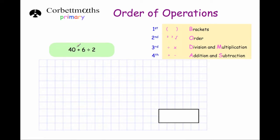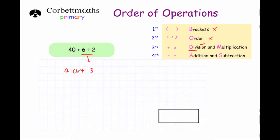Our next question is 40 plus 6 divided by 2. This question has no brackets and no squaring or cubing, but it does have a division, so we're going to do that division first. 6 divided by 2 is 3. We write down 40 plus 3, keeping the sum in the same order. Now there's just an addition: 40 plus 3 is equal to 43. So our answer is 43.